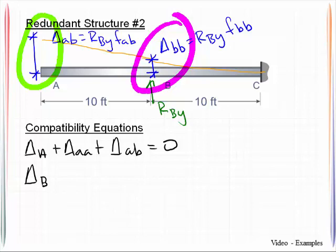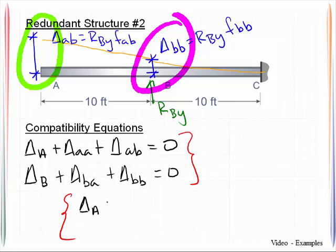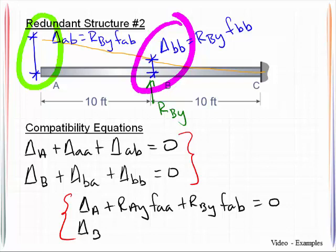So summing up at point A is delta A plus delta AA plus delta AB. And we know that that has got to equal a zero displacement. Summing them up at point B, delta B plus delta BA plus delta BB. And all of that is equal to zero. So two compatibility equations. I can then rewrite those in terms of the flexibility coefficients. So delta A plus RAY FAA plus RBY FAB, that's equal to zero. Delta B plus RAY FBA plus RBY FBB. And that'll be the final form that I want those to be present in.